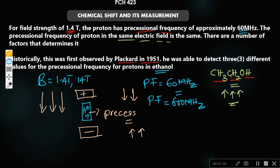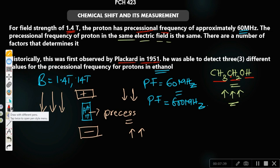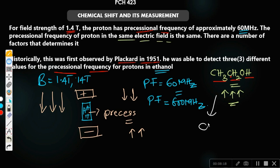There is a shift in frequency because all protons are supposed to have the same precessional frequency, but we are having different precessional frequencies. This shift in frequency depends on the chemical environment of the proton, and that is what gave rise to what we know today as chemical shift.